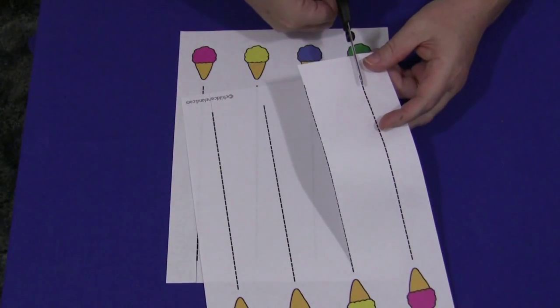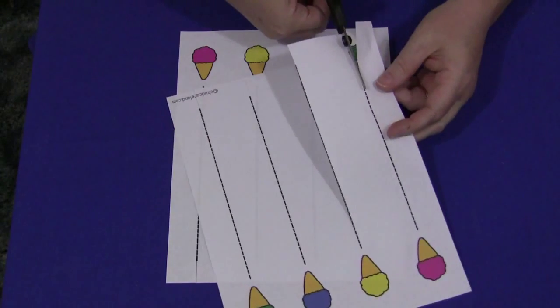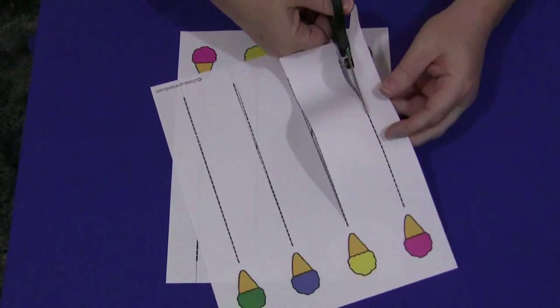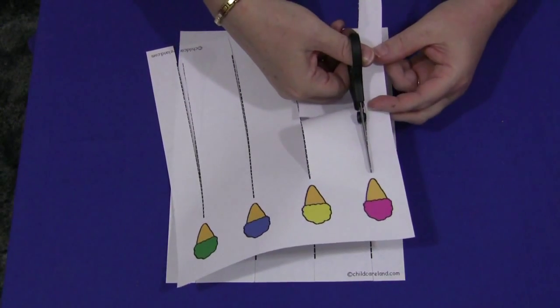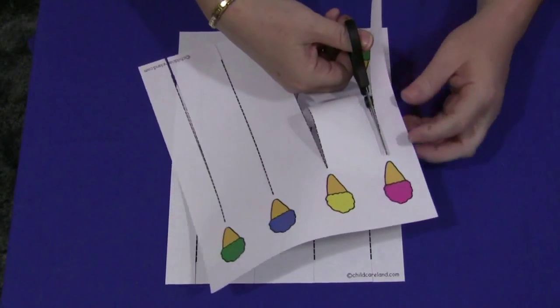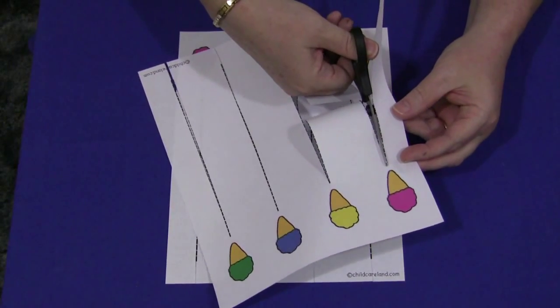This kind of activity again helps them develop some control, fine motor skills, moving the opening and closing of the scissors and then control in trying to stay where the line is on here.